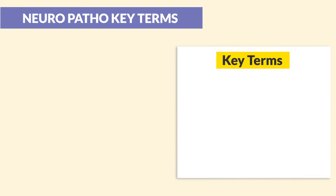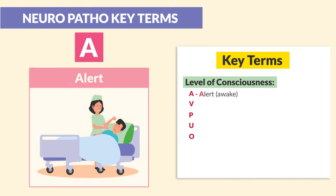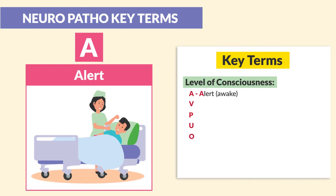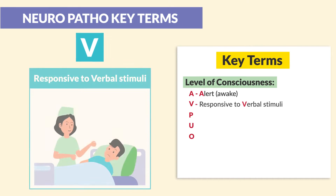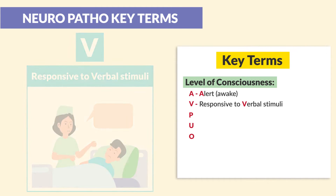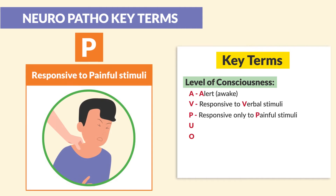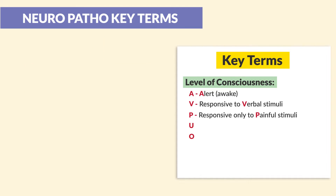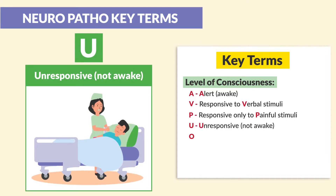The next term is a really big one, so pay attention. Level of consciousness. We have the acronym AVPU. A is for alert, or awake. V is for responsive only to verbal stimuli. P is for responsive only to painful stimuli. And U is for unresponsive, or unarousable — not awake.